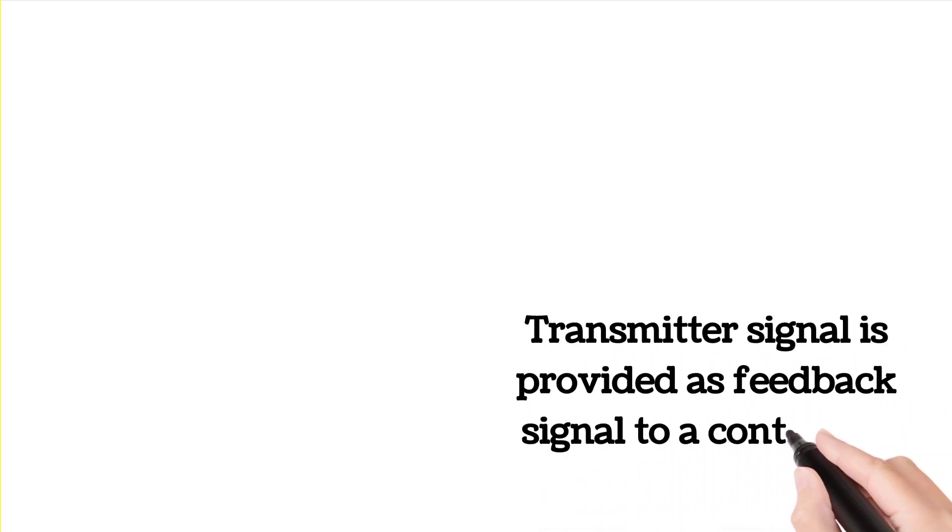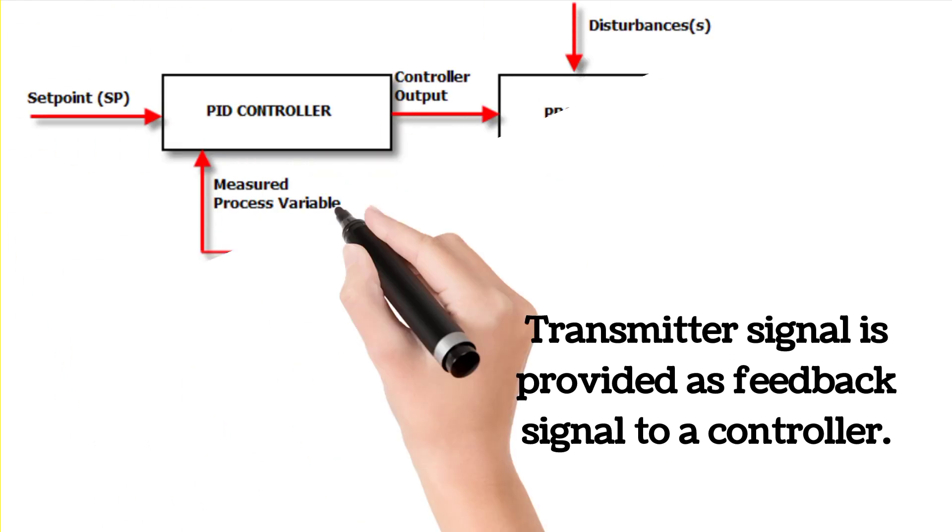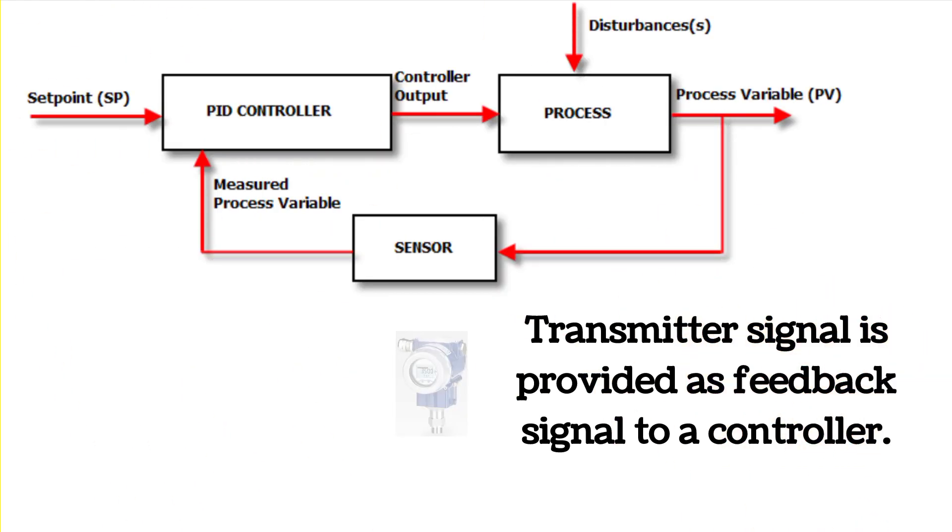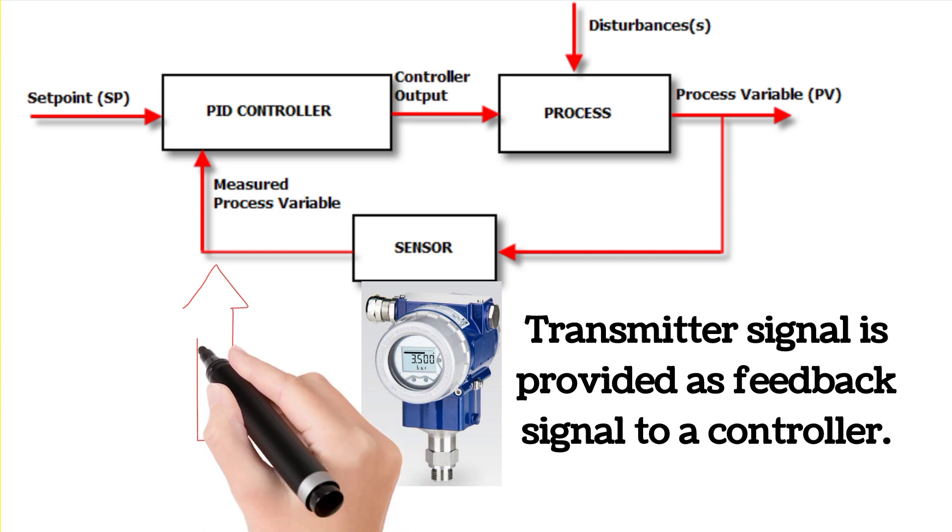Transmitter signal is provided as feedback signal to a controller. Controller block diagram is shown in the picture. Transmitter is taken as sensor as you can see by the arrow. The transmitter signal is provided to controller.